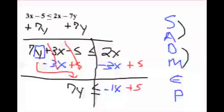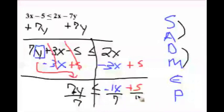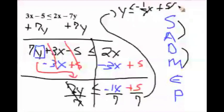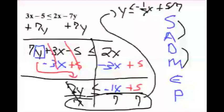Now we look at division and multiplication. It's 7 times y, so y isn't completely by itself. I'm going to divide all terms on both sides by 7. That leaves us with 1y, which is less than or equal to negative 1x over 7 plus 5 over 7. We can write it as y is less than or equal to negative one-seventh x plus 5-sevenths — or negative x over 7 plus 5 over 7, which means the same thing. Notice the inequality symbol did not change because we divided by a positive.